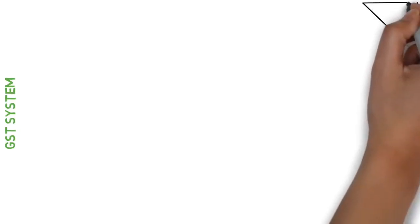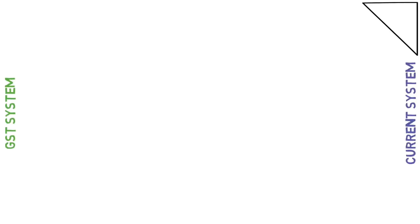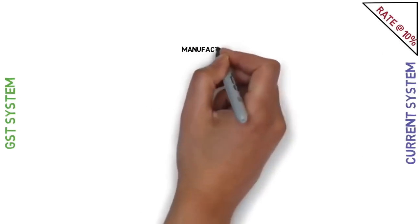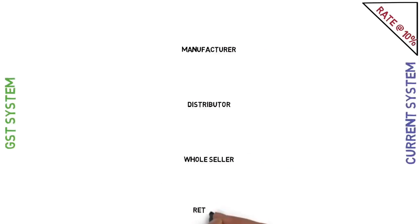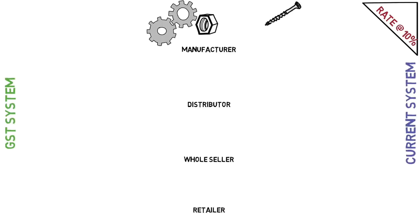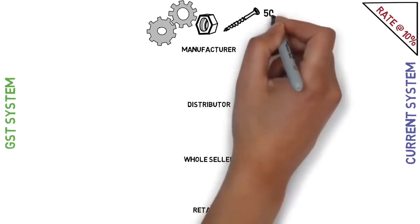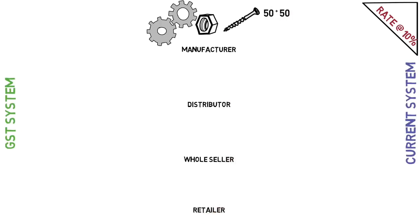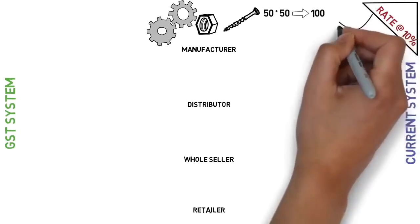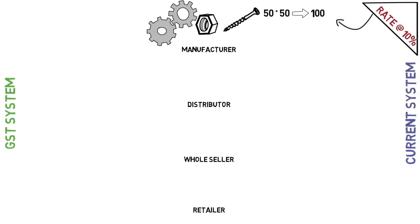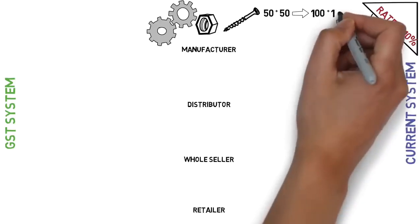So the question is how GST is different from the current taxation system in India. I will explain this with a simple example. Consider a simplified tax rate of 10% at each level. There are generally 4 levels: Manufacturer, Distributor, Wholesaler and Retailer. The manufacturer buys raw material of Rs.50 and manufactures the product, adding Rs.50 value to it, so the product becomes Rs.100. For selling this product, he needs to pay 10% tax which is Rs.10.